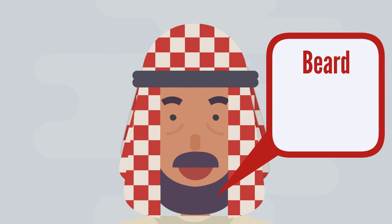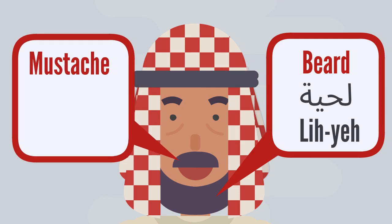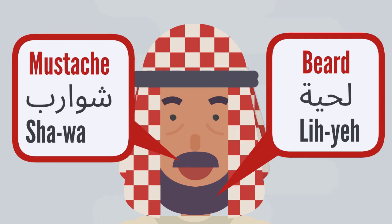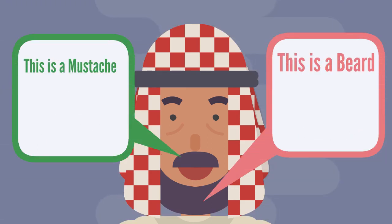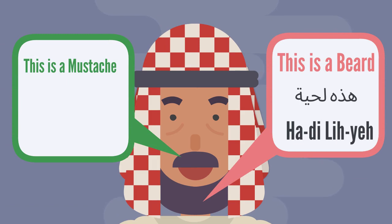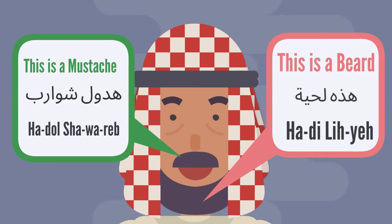Beard — lihya. And moustache — shāwārib. This is a beard — hādi lihya. And when we say 'this is a moustache,' we default to the plural — hādol shāwārib.